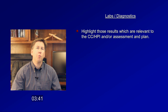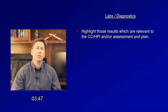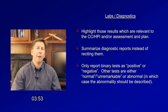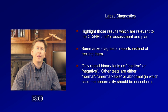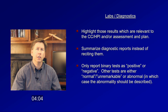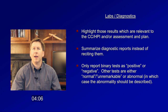Labs demonstrate an unremarkable CBC and complete metabolic panel. BNP is 220 and troponin is less than 0.07. Her UA shows only one plus protein. Chest X-ray demonstrates mild cardiomegaly and probable osteopenia. EKG reveals non-respiratory sinus arrhythmia with a rate of 56 and first-degree AV block with a PR interval of about 250 ms. She has Q waves in II, III, and aVF and evidence of LVH by voltage criteria.